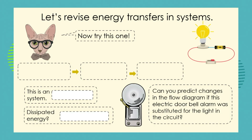Here's another one for you to try — a different kind of energy transfer system. I want you to be able to identify it, talk about dissipated or wasted energy, and describe the transfers of energy within the system. Then predict any changes in the flow diagram if this electric doorbell alarm was substituted for the light. We know that it's going to be a kind of system where particles are going to move along a wire — this is an example of an electrical system.